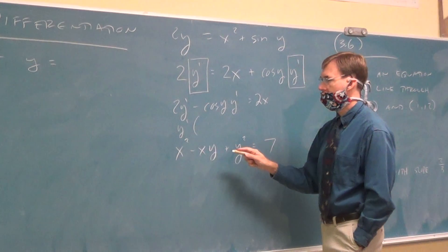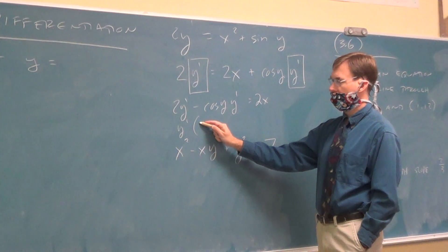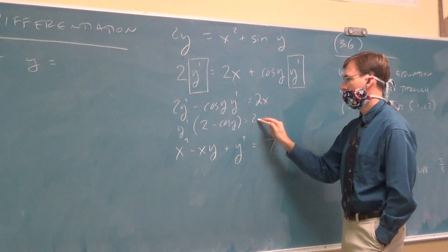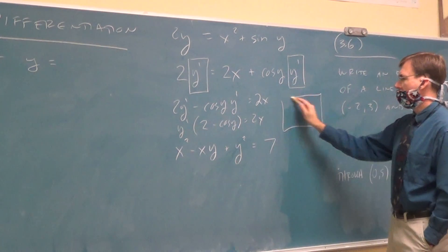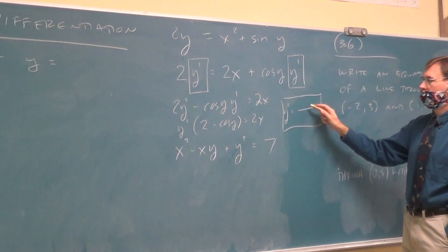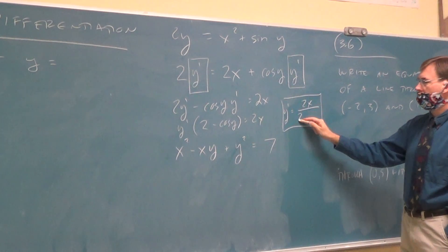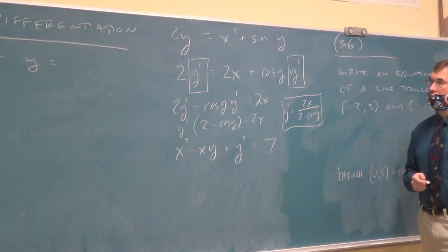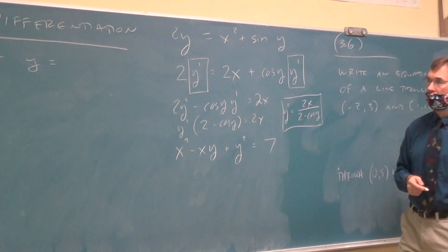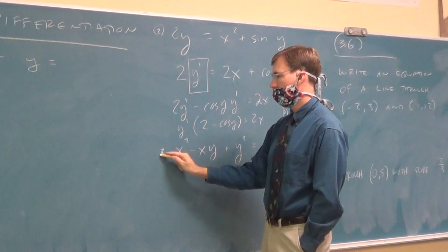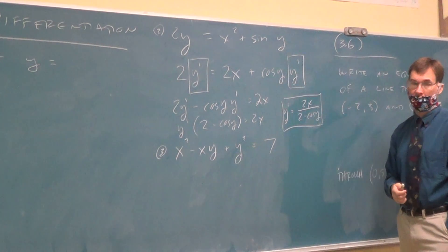So, we'll factor out that y derivative, which would leave two minus six and one. Agree. And then your grand total answer for the derivative? Two x over two minus six and one. Agree. Question about number two before we take on problem three, and then we'll call it a day.